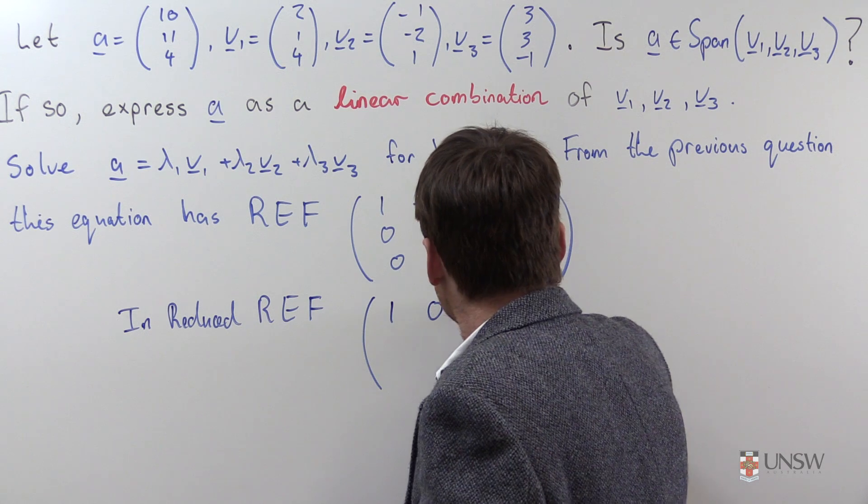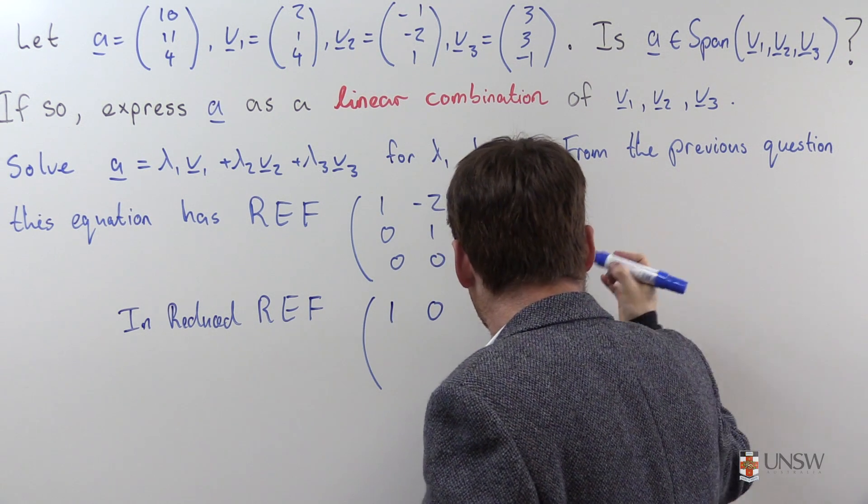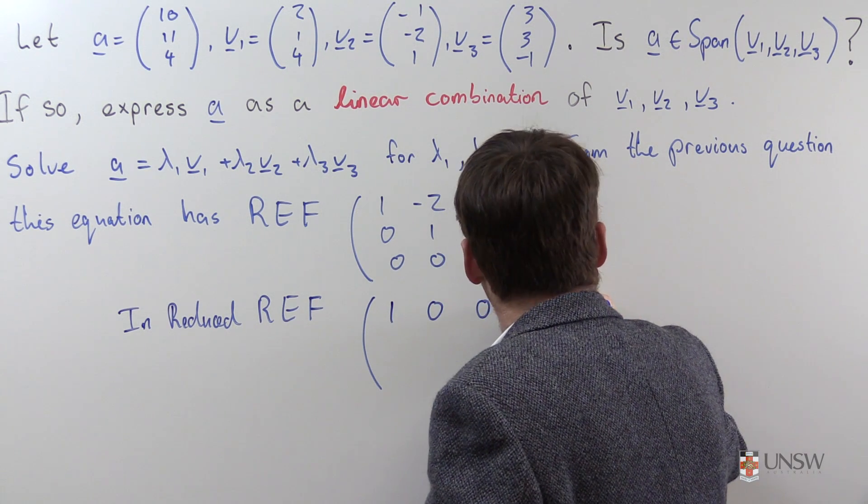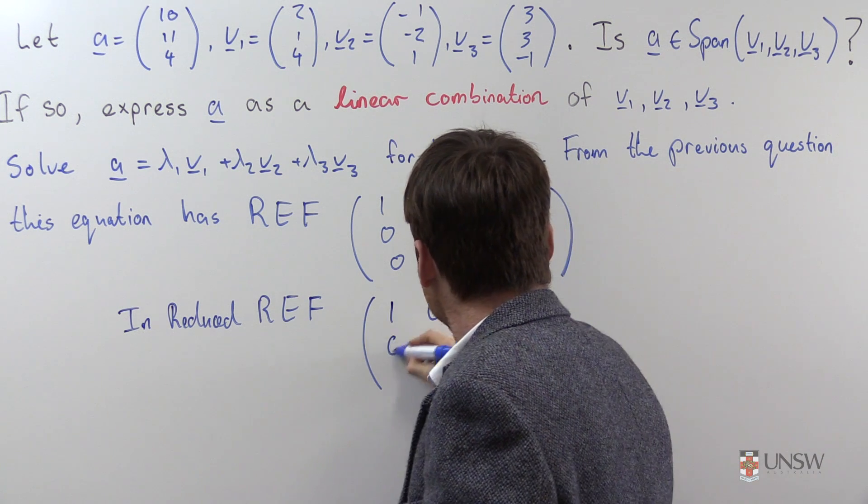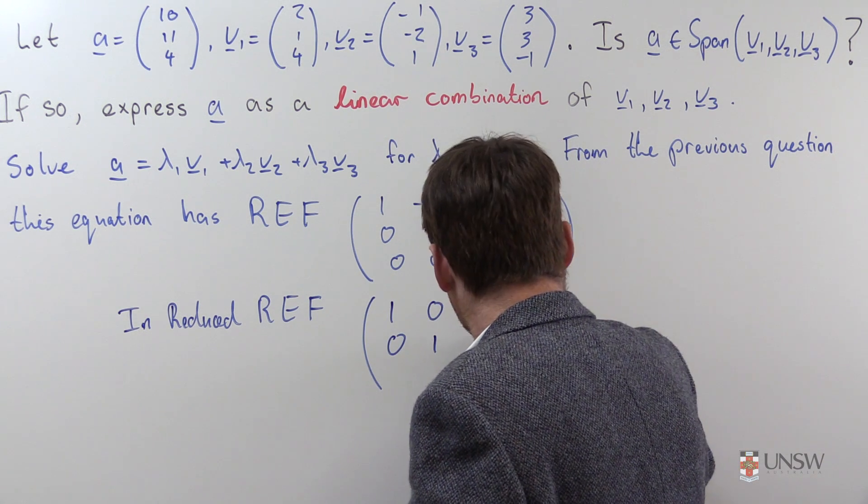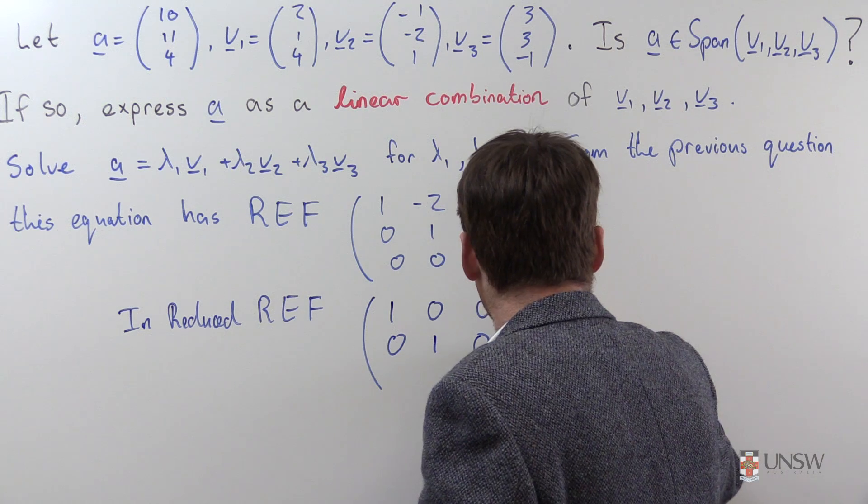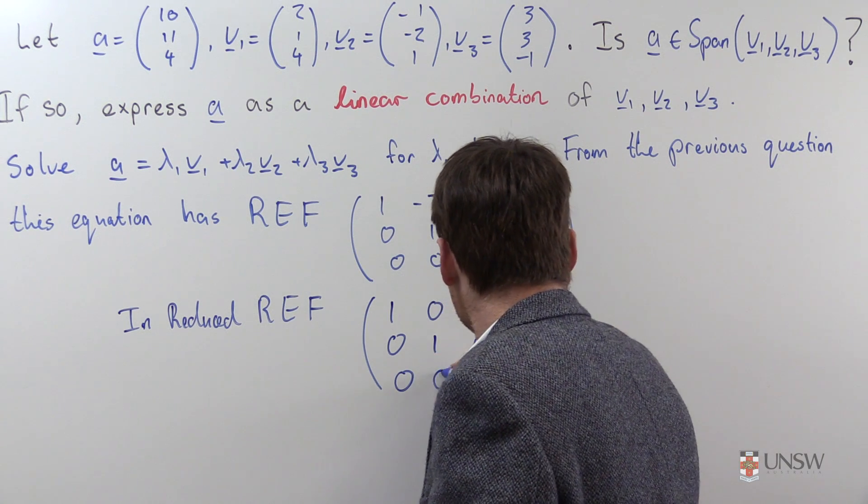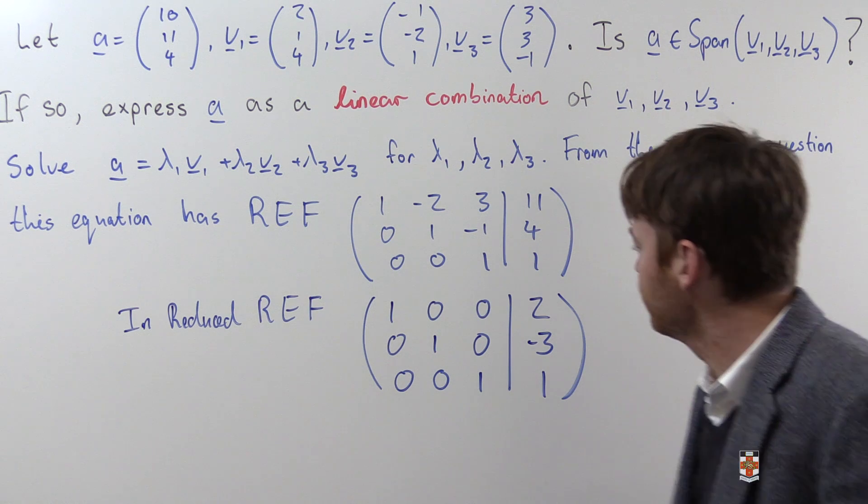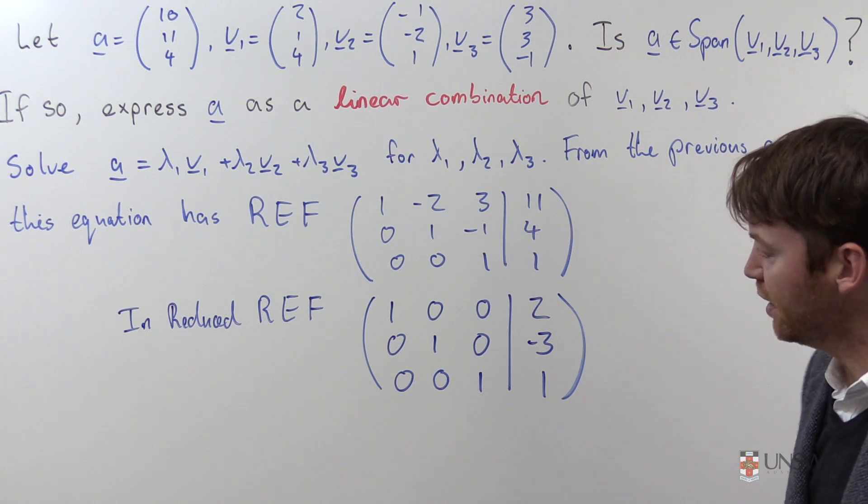in reduced row echelon form. I will, again, skip over the elementary row operations. This is just 1, 0, 0, bar, let's see, 2, 0, 1, 0, negative 3, 0, 0, 1, 1. Excellent.